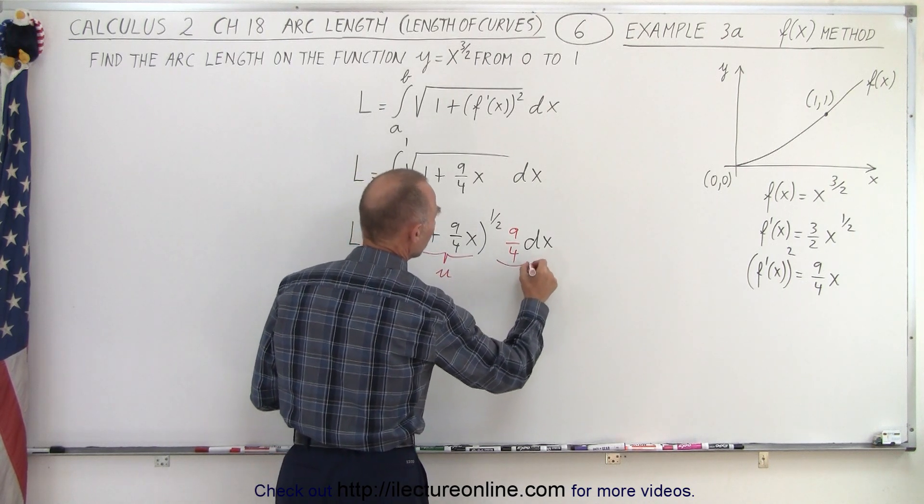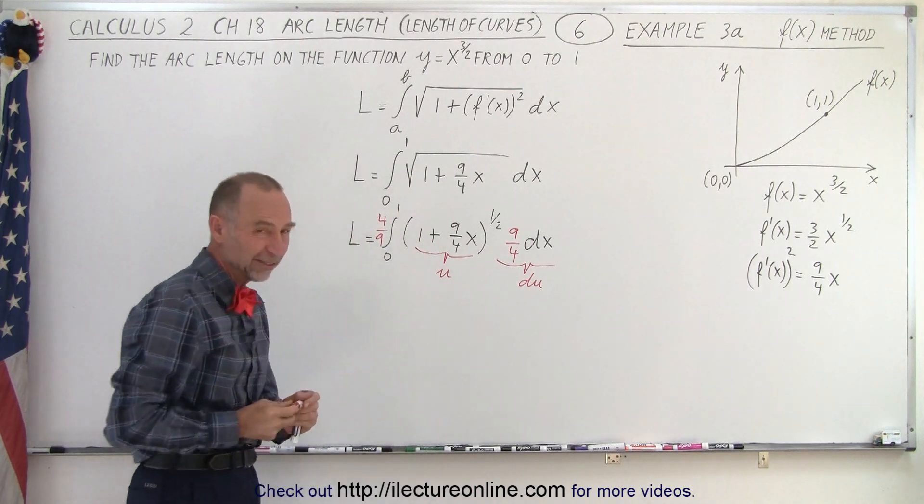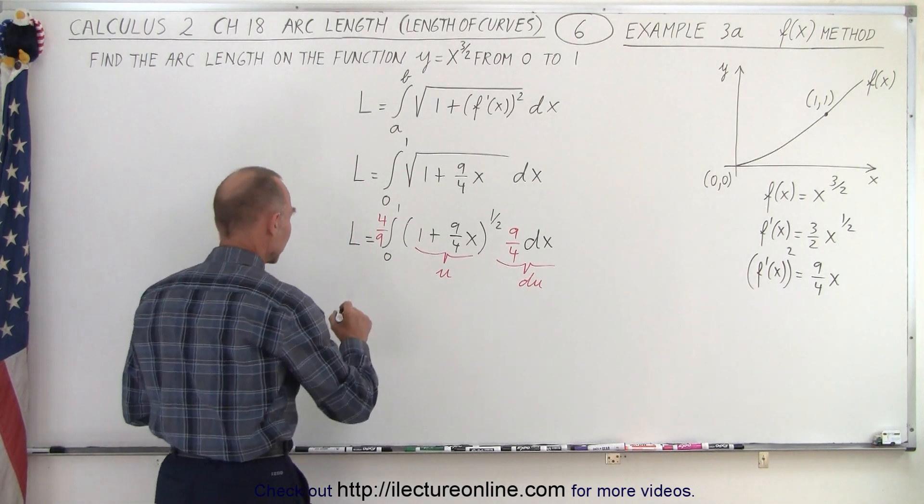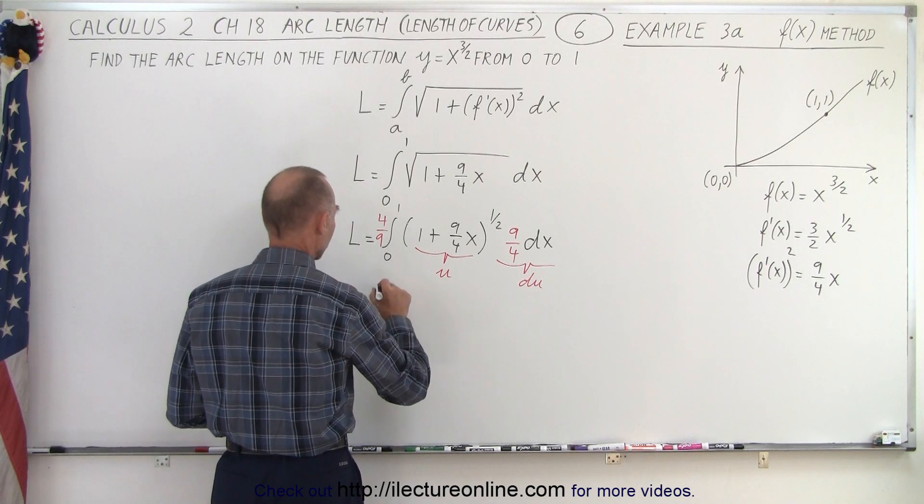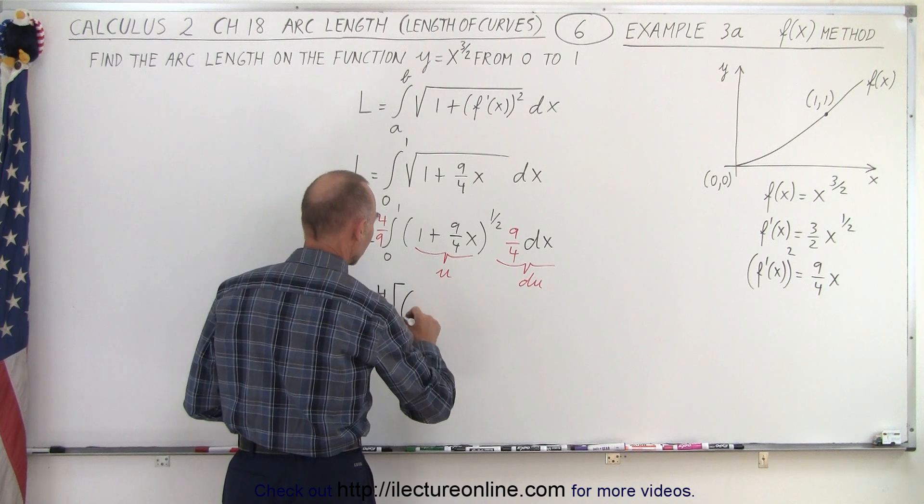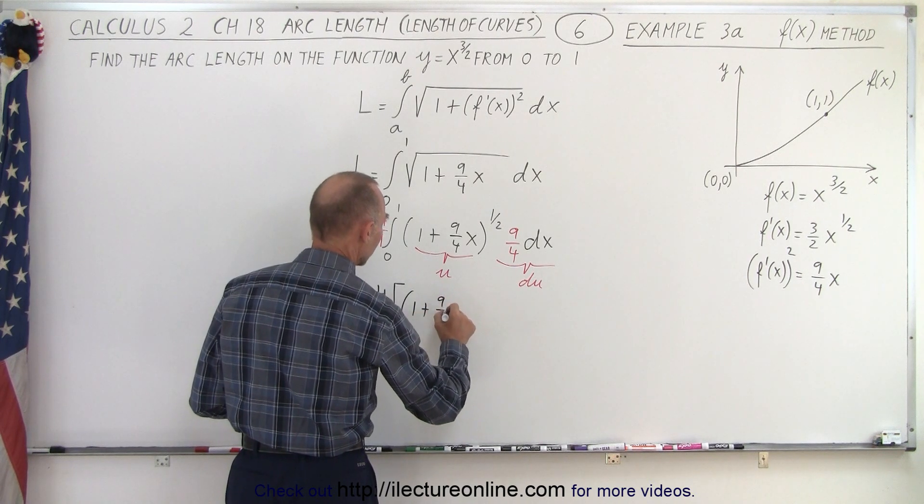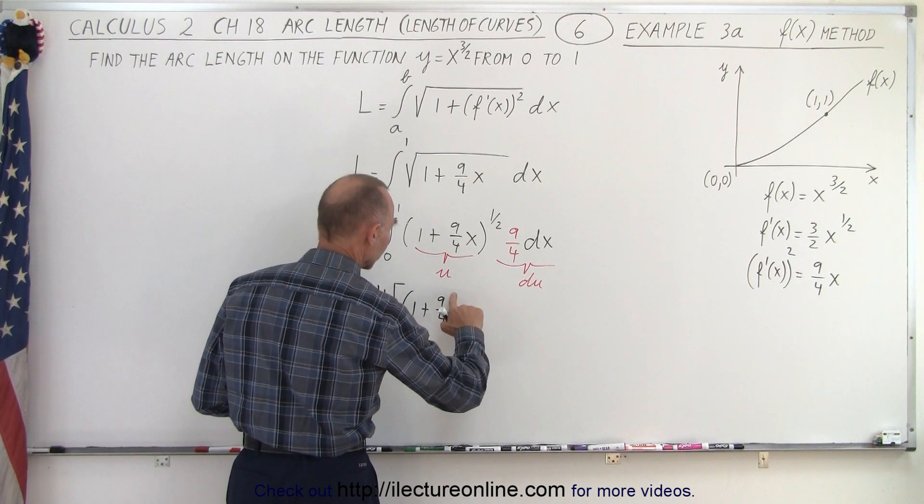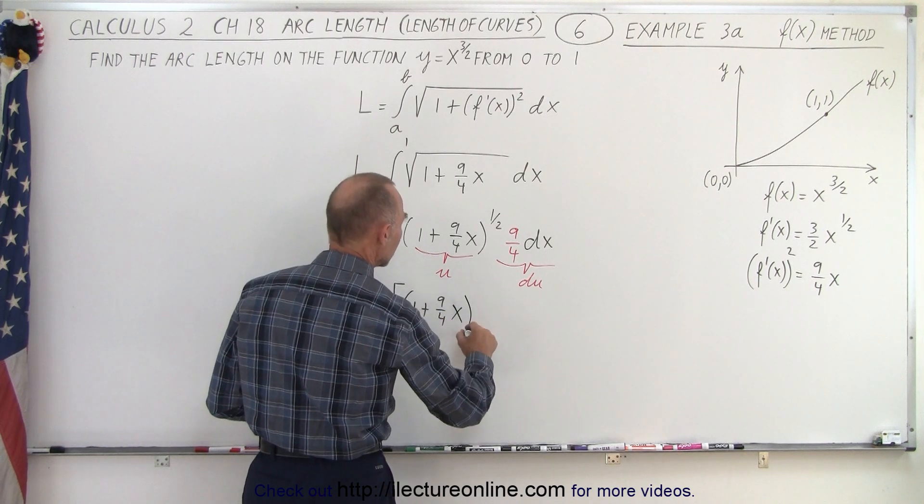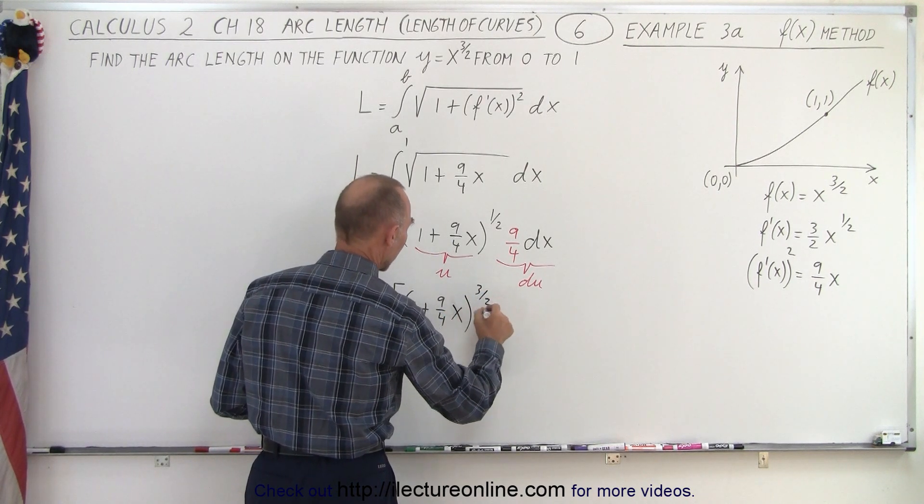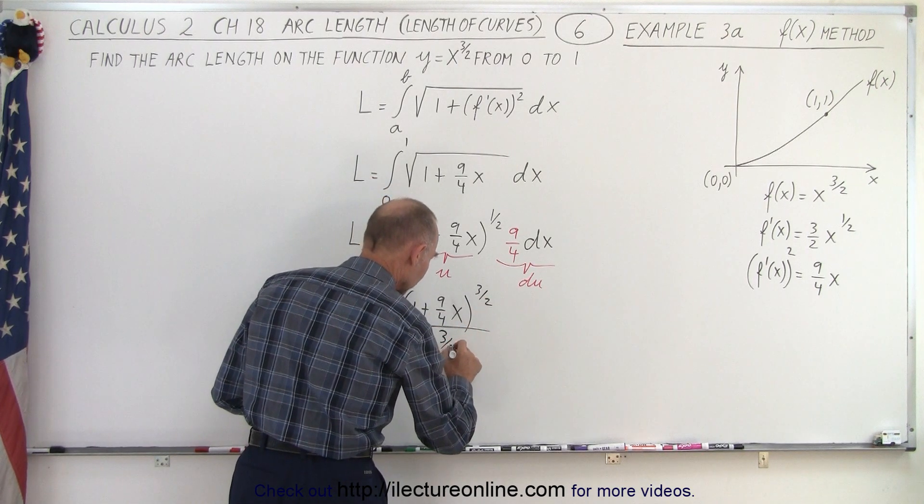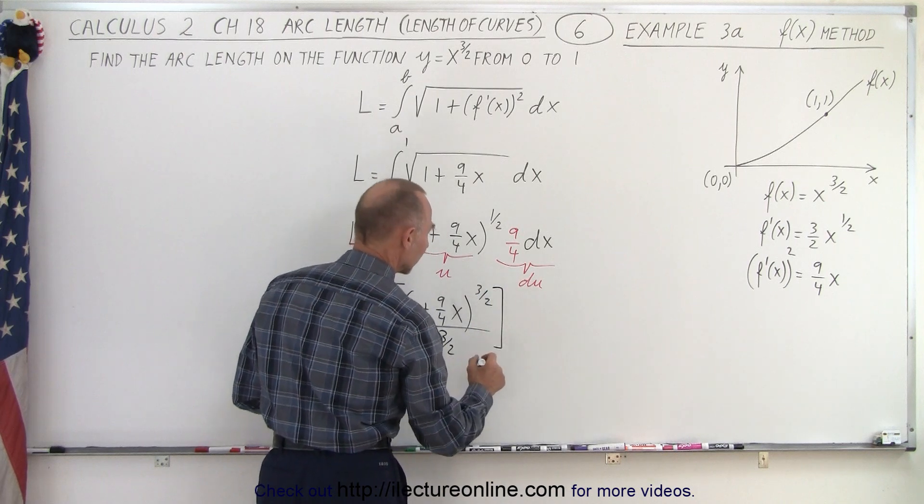So now we can say that the length is equal to four over nine times the quantity which is one plus nine over four, oops forgot the x, can't forget the x here, x to the three halves power divided by the new exponent three over two and we're going to evaluate that from zero to one.